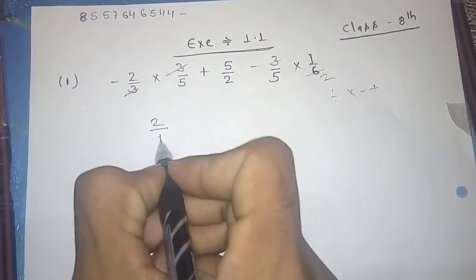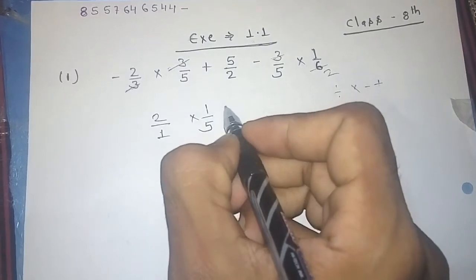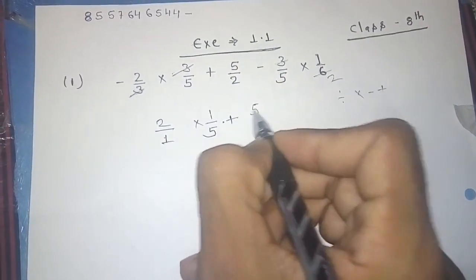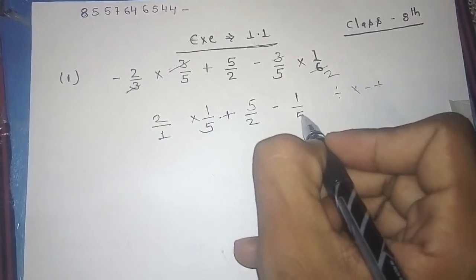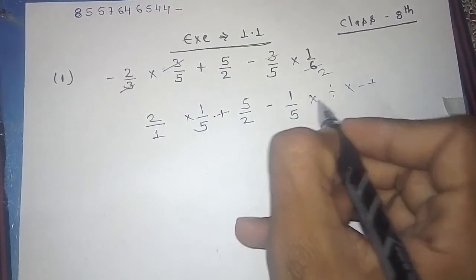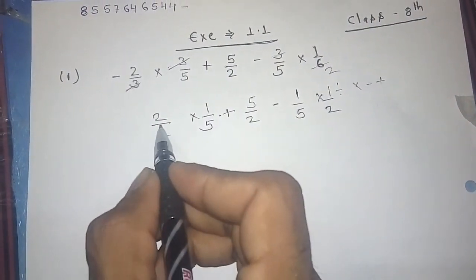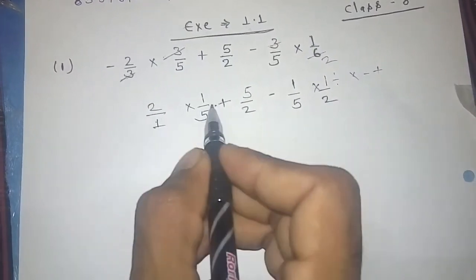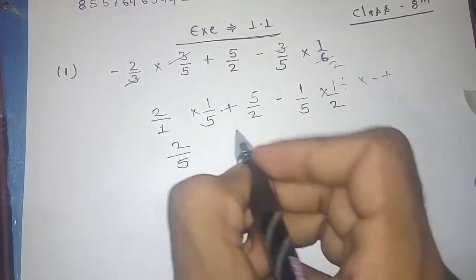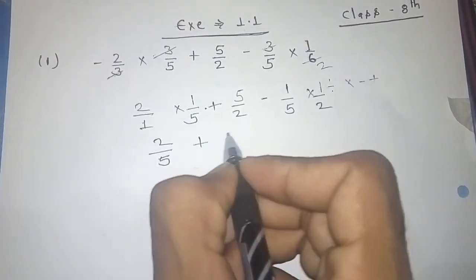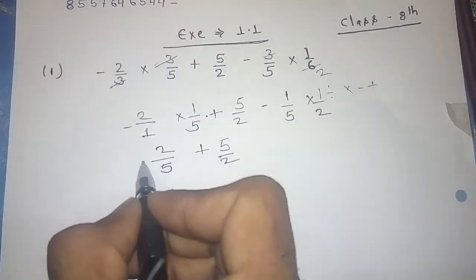The rewritten equation is: 2/1 × 1/5, plus 5/2, minus 1/5 × 1/2. We are going to solve that equation again — we will multiply both numbers to get 2/5, plus 5/2, and we keep the minus sign as given in the question.